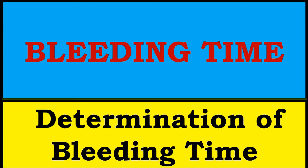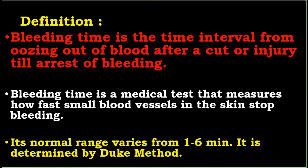Bleeding time is the time interval from oozing out of blood after a cut or injury till the arrest of bleeding. It is a medical test that measures how fast small blood vessels in the skin stop bleeding.